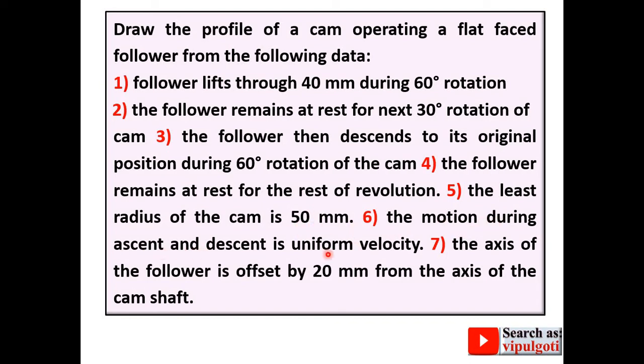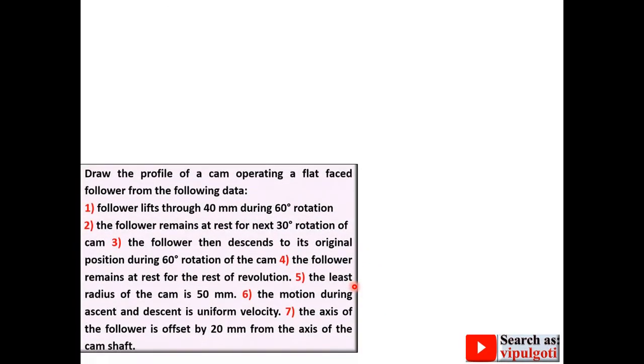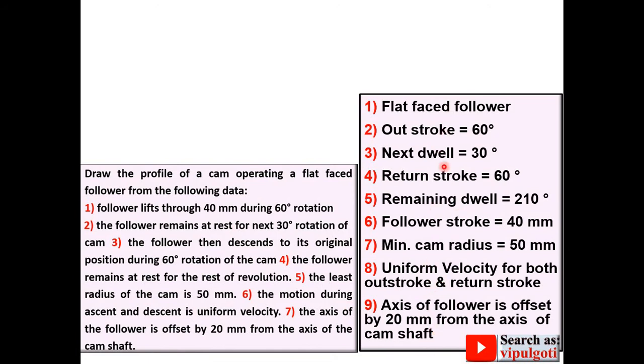The motion during ascent and descent is uniform velocity. The axis of the follower is offset by 20 mm from the axis of the cam shaft, so offset distance is given to you. You have to draw the offset circle and draw the tangent lines. This is the description and I have written the important points in summarized form.